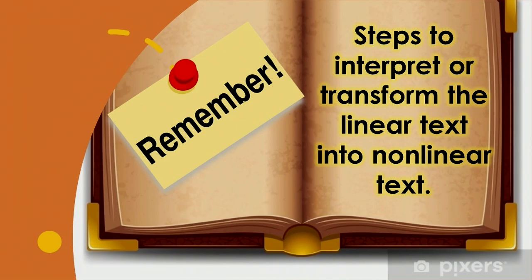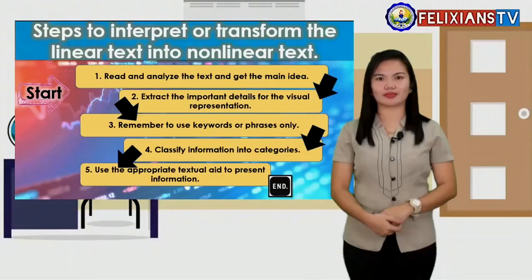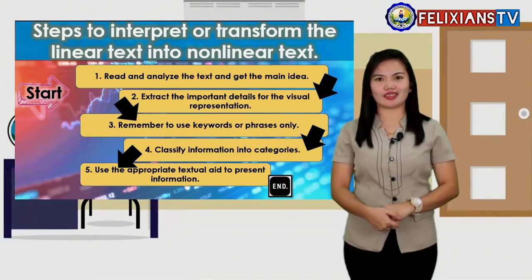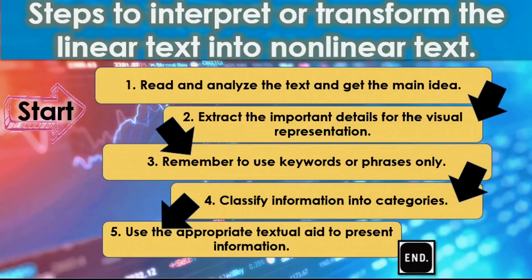Now that you have mastered the competency, let us remember these steps to interpret or transform linear text into non-linear text. First, read and analyze the text and get the main idea. Second, extract the important details for the visual representation. Third, remember to use keywords or phrases only. Fourth, classify information into categories. And lastly, use the appropriate textual aid to present the information.